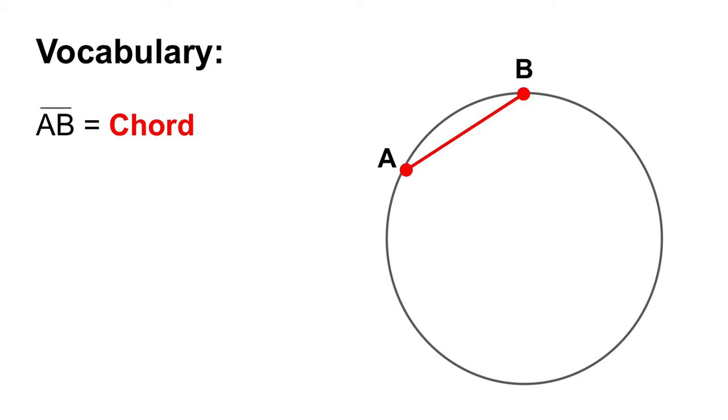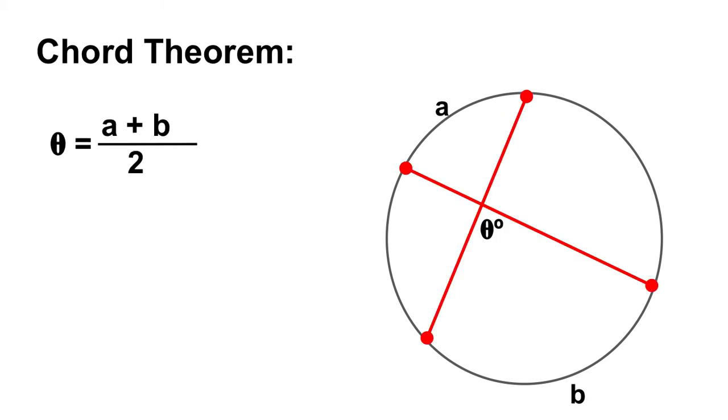So if you have two chords in a circle that intersect each other and they form an angle, the way that you can calculate that angle is to add the two intercepting arcs together. Here we're talking about this arc A along with this arc B. We're going to add those two arcs together and then divide by two. You're basically just taking the average of them.